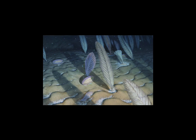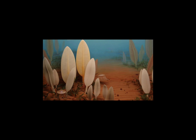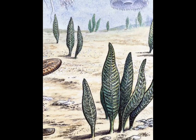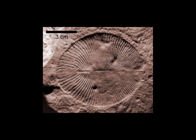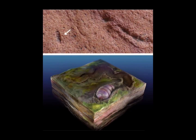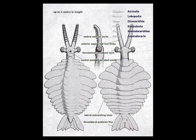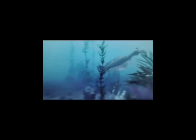Complex life on Earth started during the Ediacaran period, which lasted from about 635 million years ago to about 541 million years ago. The landscape during this time was dominated by algae, and there were the first animals like the stationary Dickinsonia that would have absorbed nutrients directly from the seafloor. Eventually worm-like animals started to appear and they quickly started to burrow into the ground, which softened the sediment and made way for more complex animals to start to evolve.